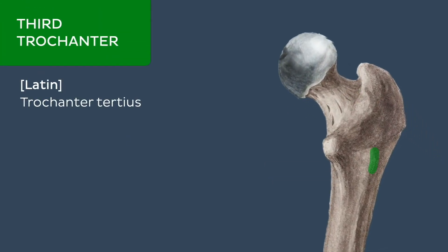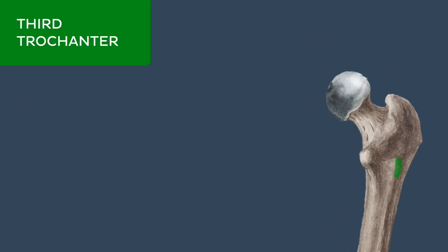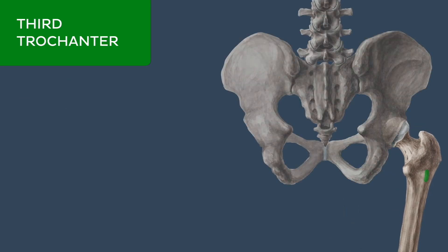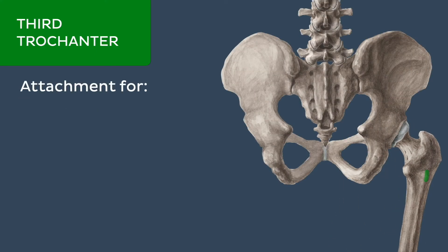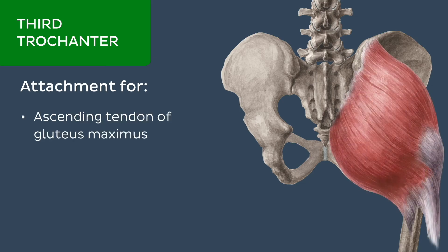The third trochanter is a variably present, round bony projection adjacent to the proximal aspect of the gluteal tuberosity of the proximal end. When present, it functions to provide an additional attachment site for the ascending tendon of the gluteus maximus muscle.